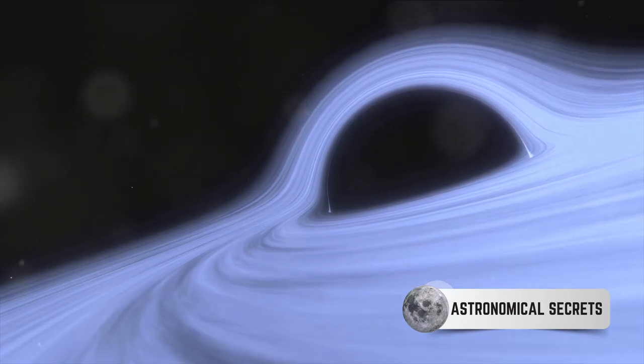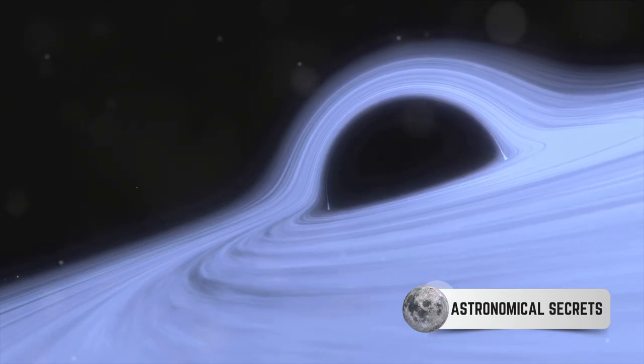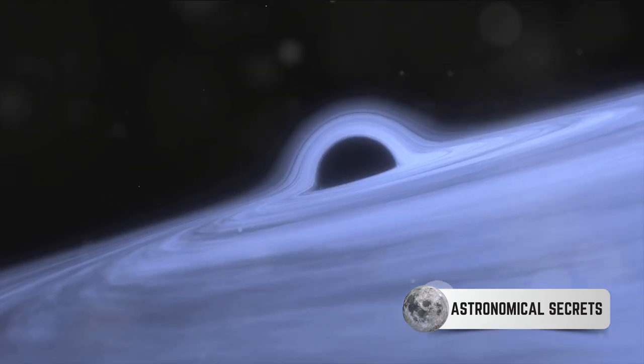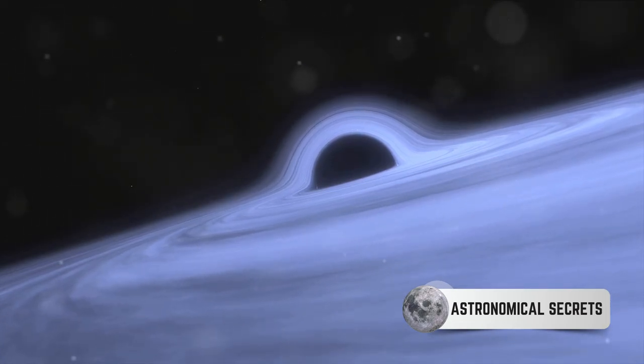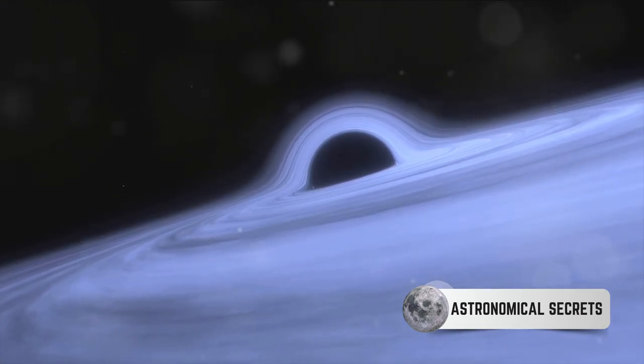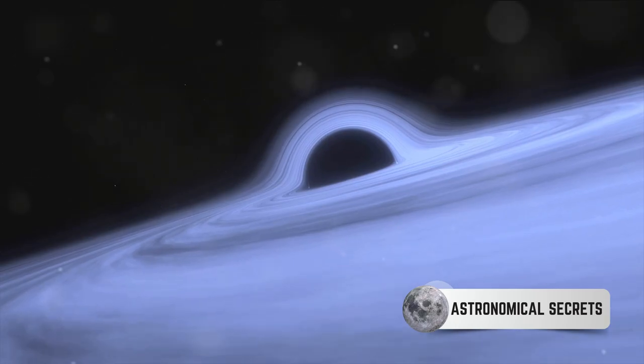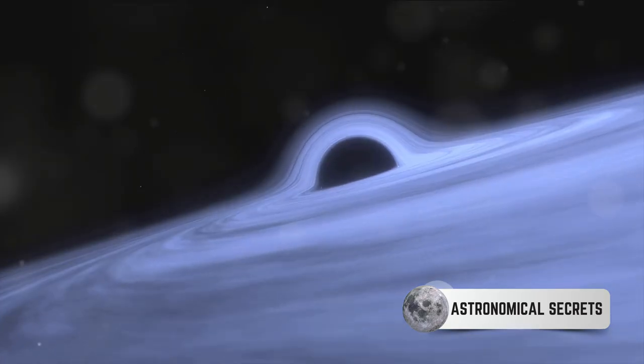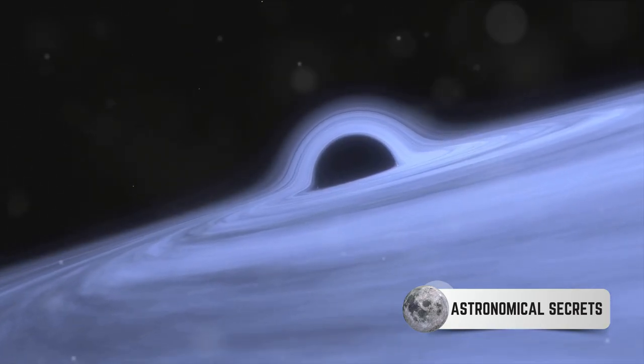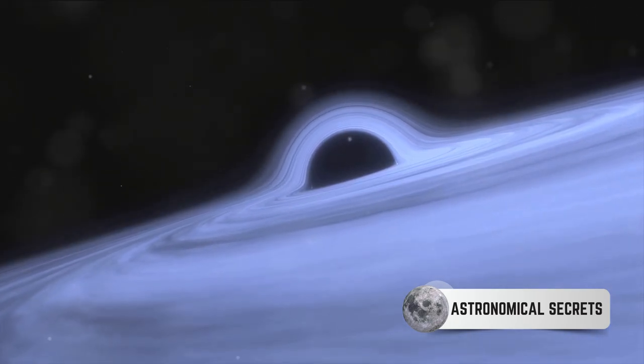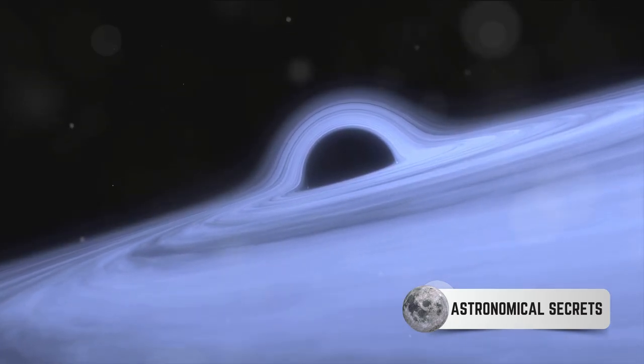An accretion disk in its simplest form is a structure often found around massive celestial bodies like black holes. Picture a whirlpool or a spinning top and you've got a basic visual representation of this incredible cosmic feature. But why do they form around black holes? Well, when a black hole pulls in nearby matter, this matter doesn't fall directly into the black hole.